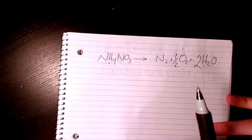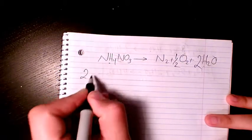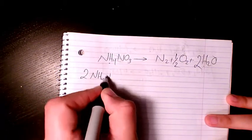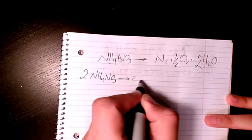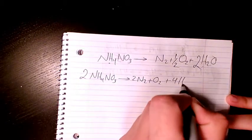If you want to get rid of this denominator here, get rid of the fraction, you need to multiply everything by two. So it's going to be 2NH4NO3 gives 2N2 plus O2 plus 4H2O.